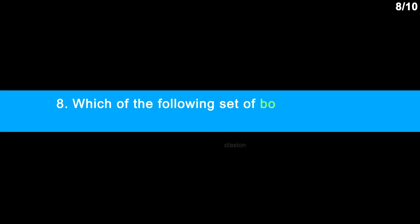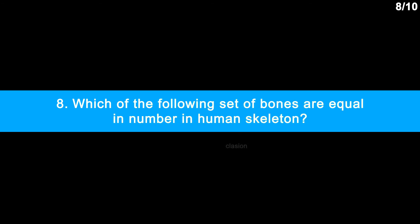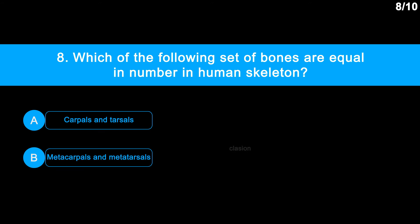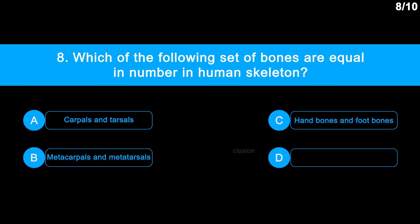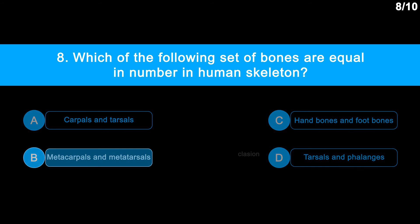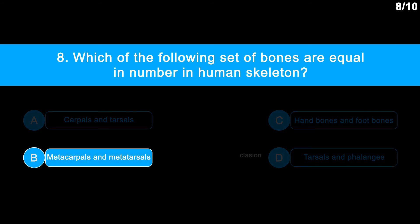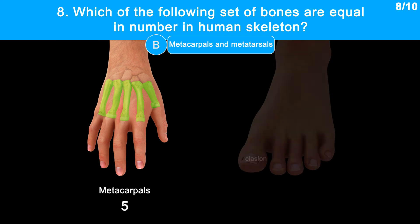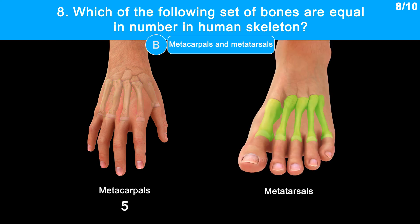Question 8: Which of the following sets of bones are equal in number in the human skeleton? Option A: carpals and tarsals. Option B: metacarpals and metatarsals. Option C: hand bones and foot bones. Option D: tarsals and phalanges. Correct answer is Option B: metacarpals and metatarsals. Metacarpals are bones of the palm — 5. Metatarsals are the bones of the forefoot — 5. Metacarpals are analogous to the metatarsals.